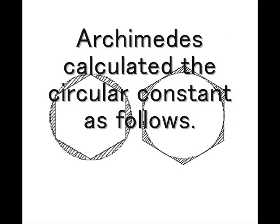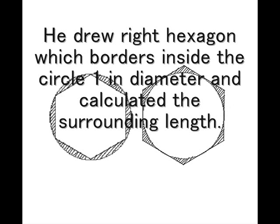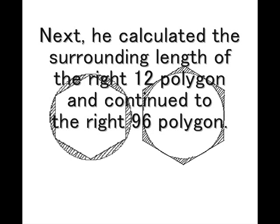Archimedes calculated the circular constant as follows. He drew a regular hexagon which borders inside a circle of diameter 1, and calculated the surrounding length. Next, he calculated the surrounding length of the regular 12-polygon, and continued up to the regular 96-polygon.